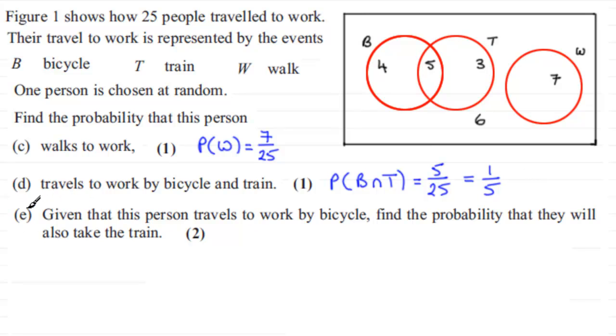Now for the last part, we've got what's called a conditional probability question. These type of questions quite often appear towards the end of a question like this. We're given that the person travels to work by bicycle. Find the probability that they will also take the train. So what we've got to work out is the probability the person takes the train given, and we write a vertical line here for that, given that they travel to work by bicycle.